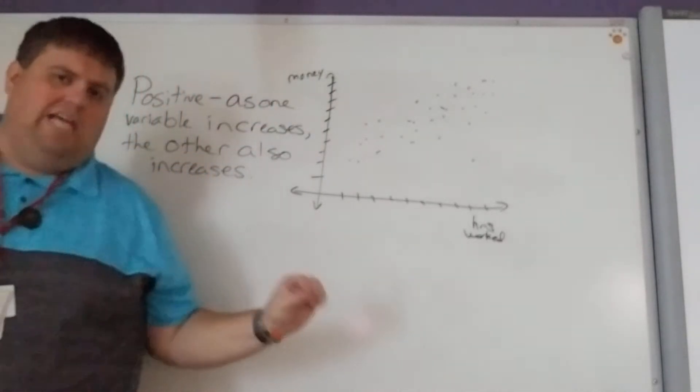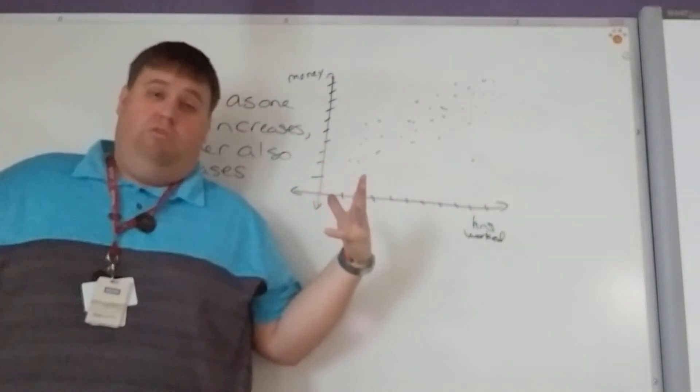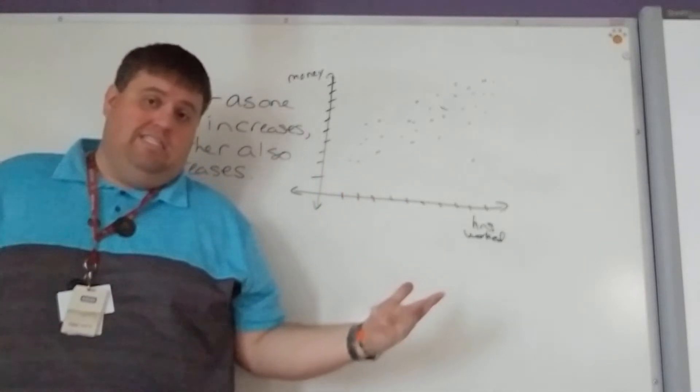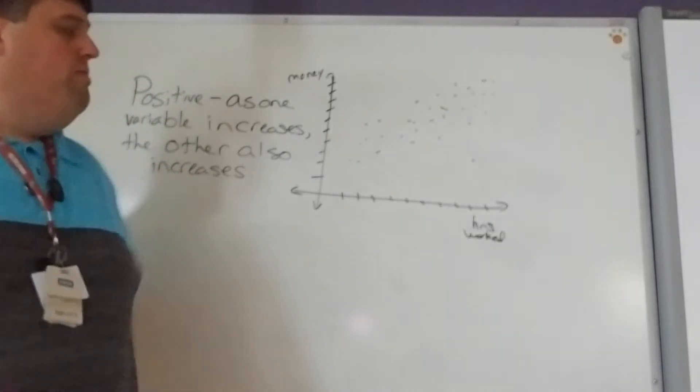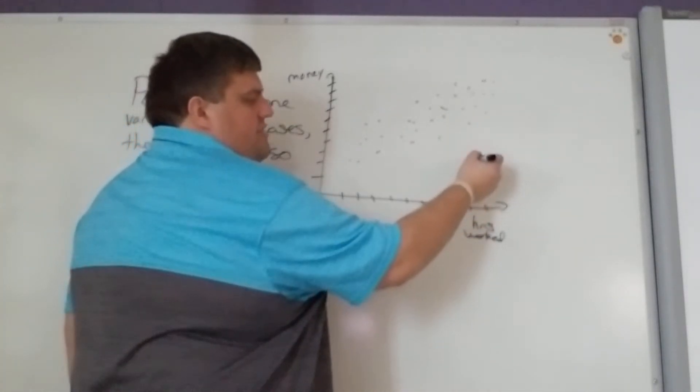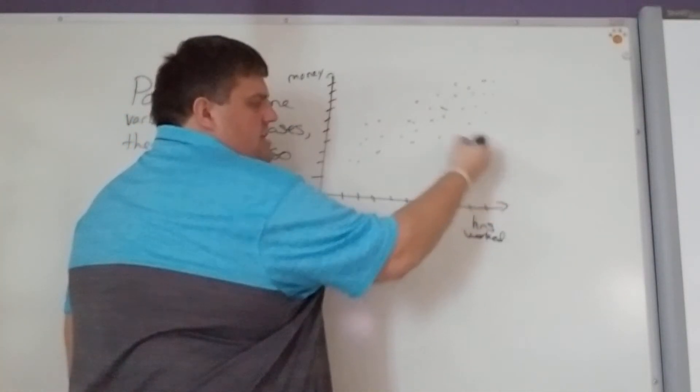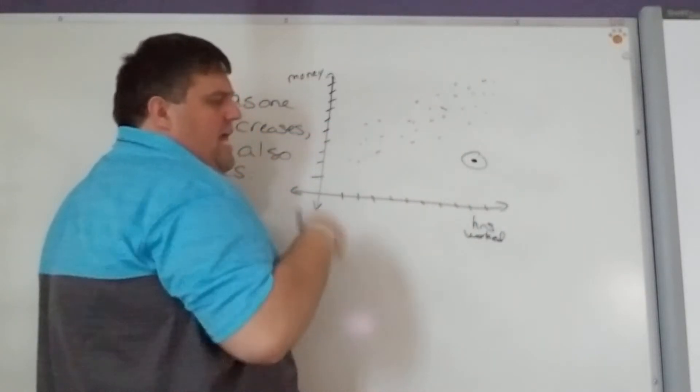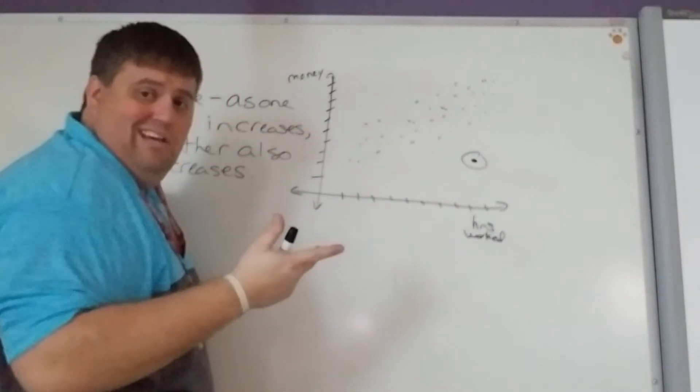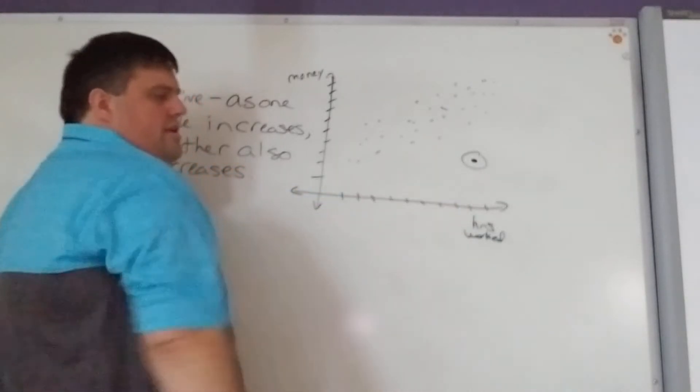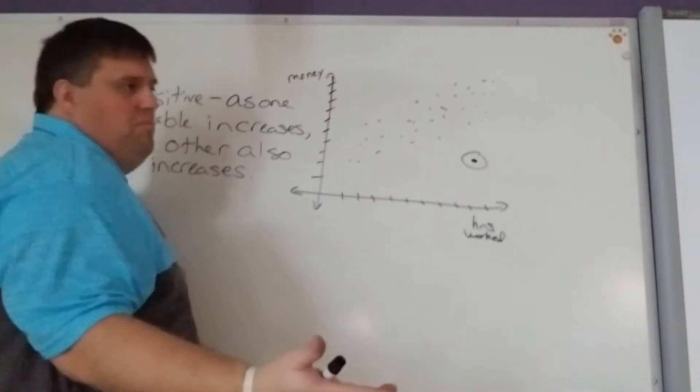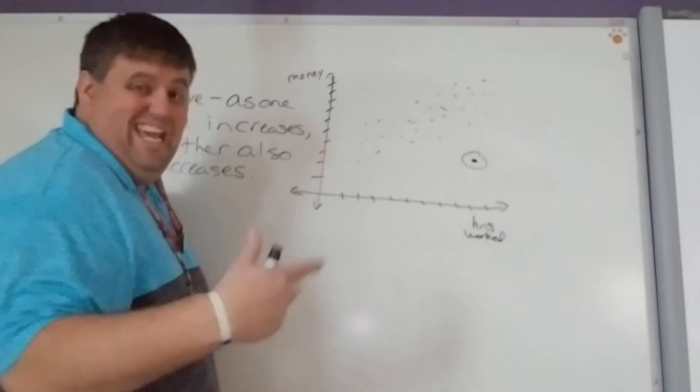Now, notice that I said typically here, because we're talking about in general. There's always some instances where maybe that's not the case. We would call those outliers. Like, see this point right here. It doesn't really fit the trend of what's going on with the rest of the data, right? Maybe this person is a lawyer, and they make so much money no matter what, right? Like, they have a salary.